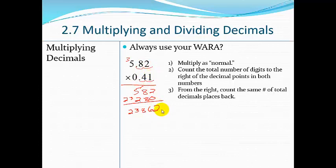So from here, I need to move my decimal from the right. Count the same number of total decimal places back. So I have 4. So I go 1, 2, 3, 4.